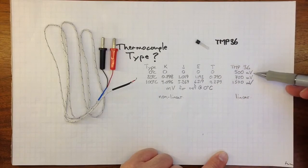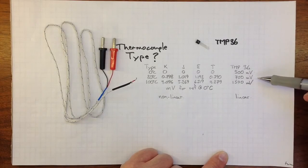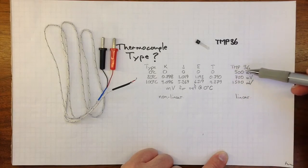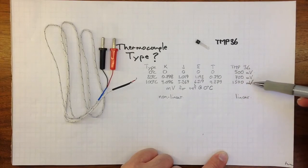So at zero degrees Celsius, we'll see 500 millivolts, half a volt. At 20 degrees Celsius, 700 millivolts, that's 200 millivolts higher, 10 millivolts for every degree Celsius. And at 100 degrees Celsius, we'll see 1500 millivolts, one and a half volts.